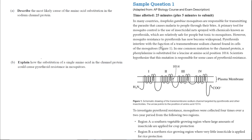Pyrethroids interfere with the function of a transmembrane sodium channel found in cells of the mosquitoes. In one common mutation, the channel protein has a phenylalanine substituted for a leucine at amino acid position 1014. Scientists hypothesize that this mutation is responsible for some cases of pyrethroid resistance.